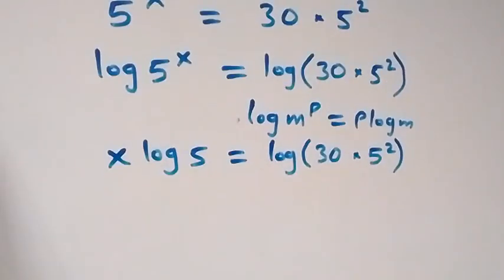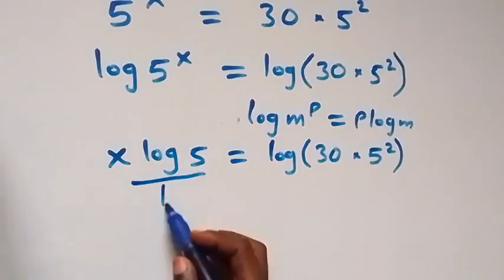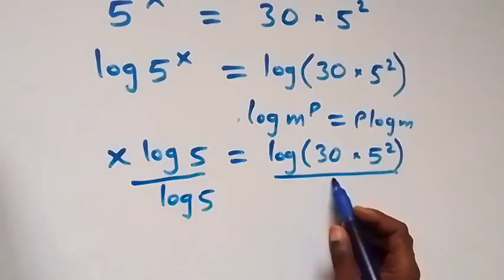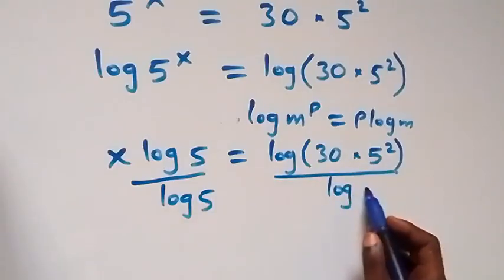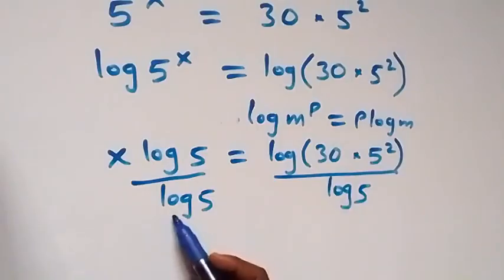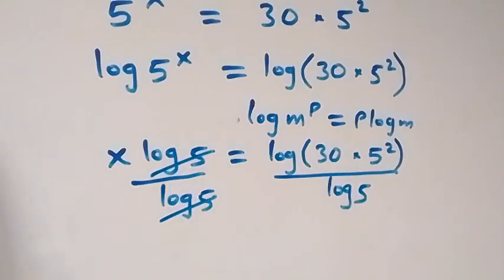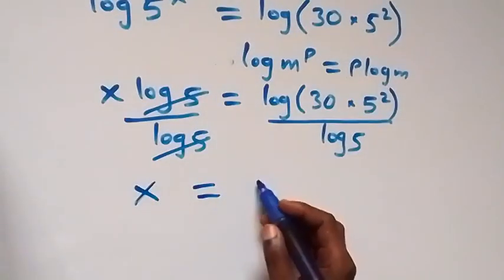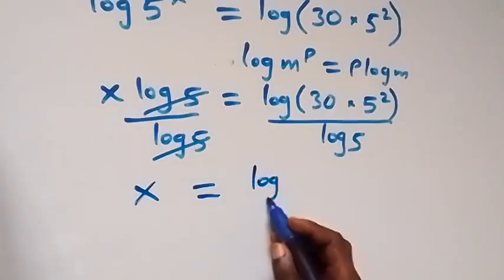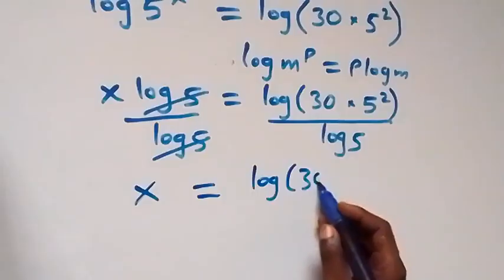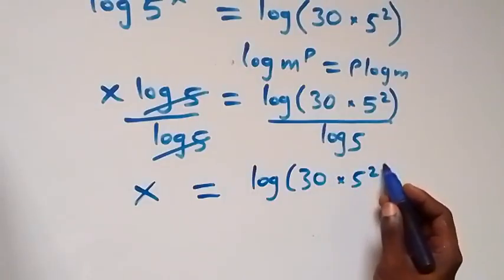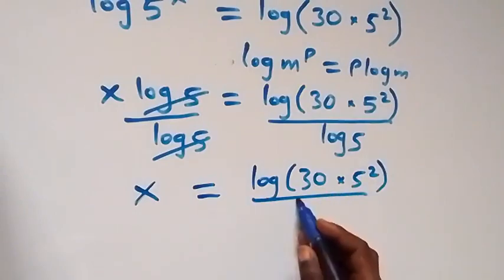Next step, we can divide both sides by log 5. Divide here by log 5 and also divide here by log 5. Log 5 cancels each other, and we have x equals log of 30 times 5 squared over log 5.